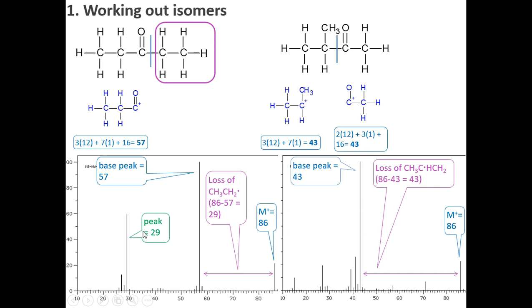We also have a peak at 29, which means we must have an ethyl in some way in the molecule. So here's the ethyl and that gives the primary carbocation. So it's not as tall because it is a primary.